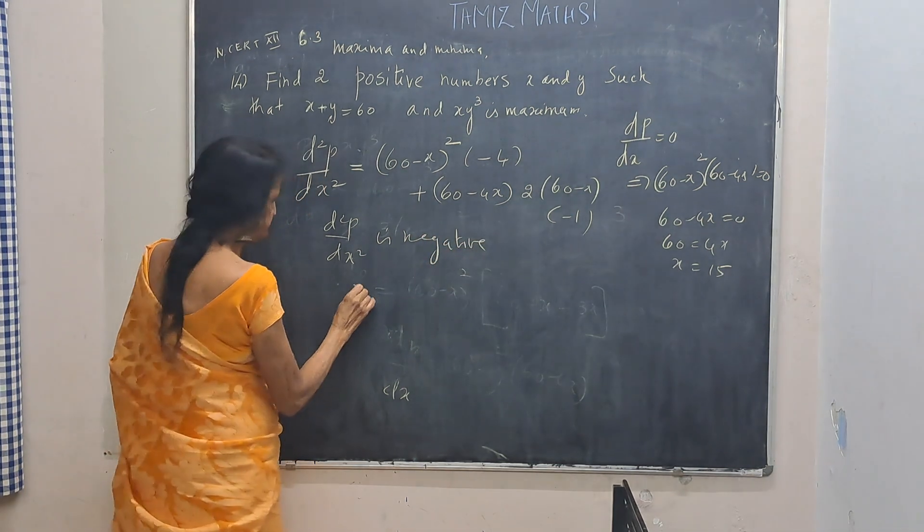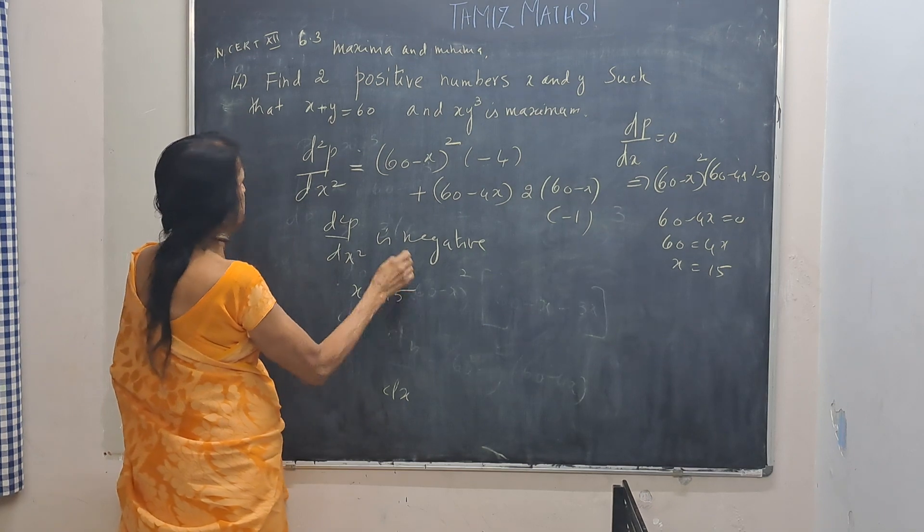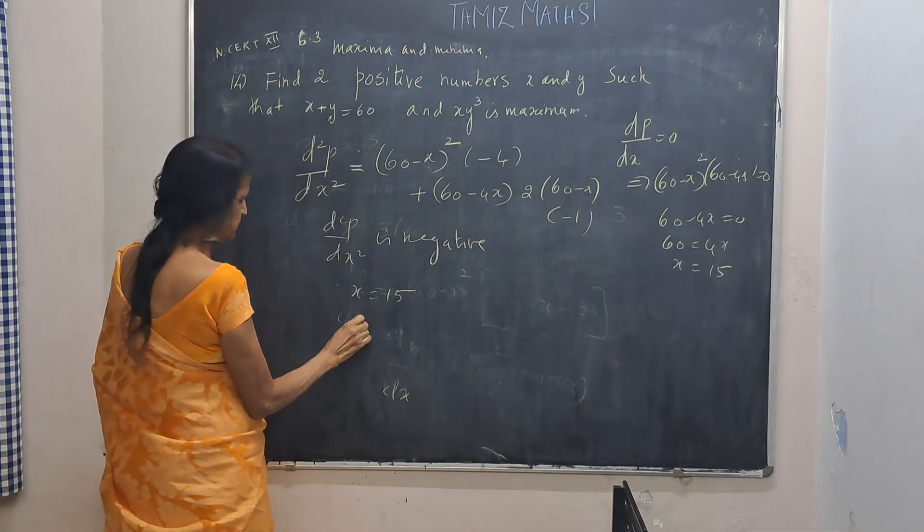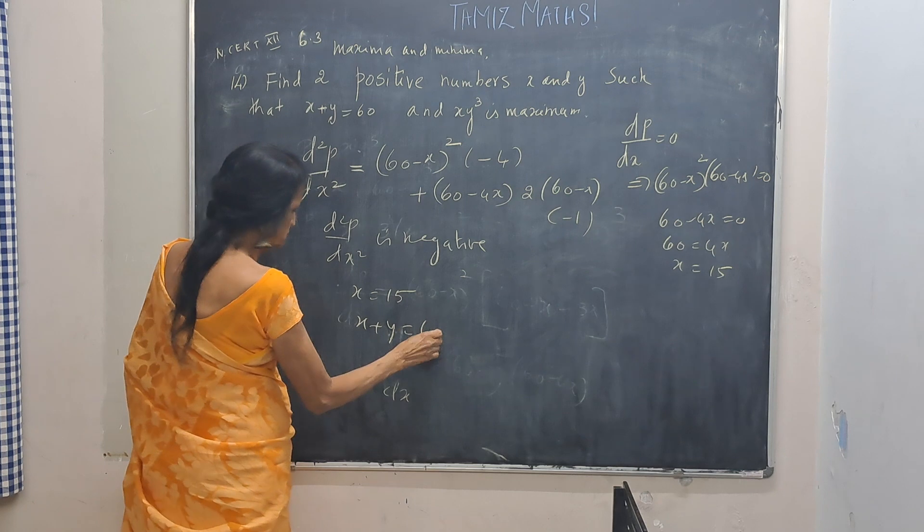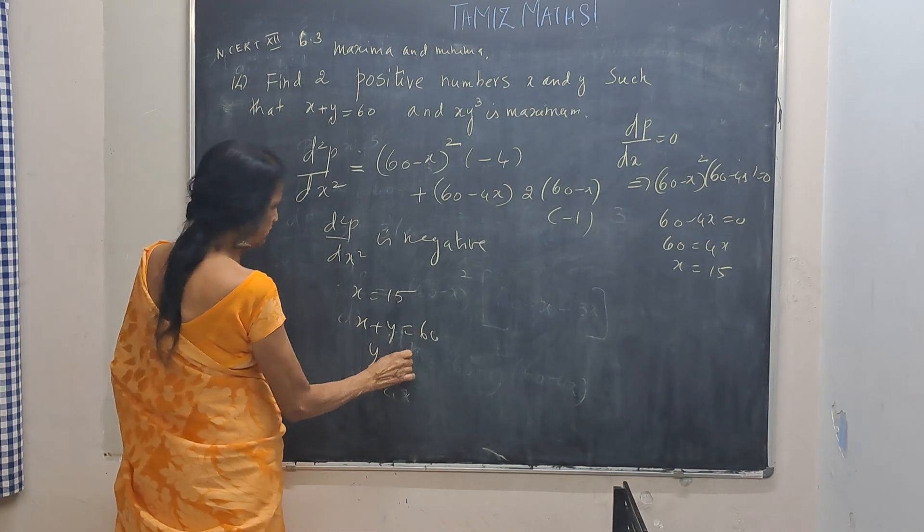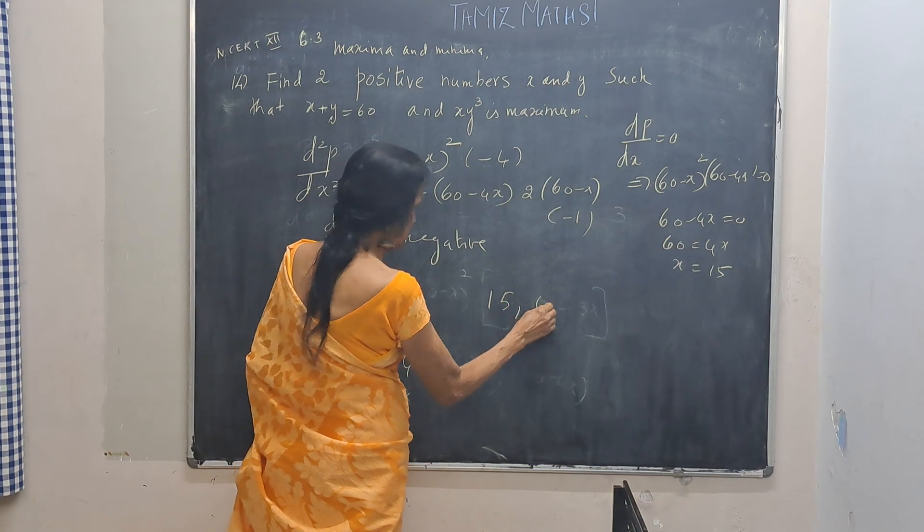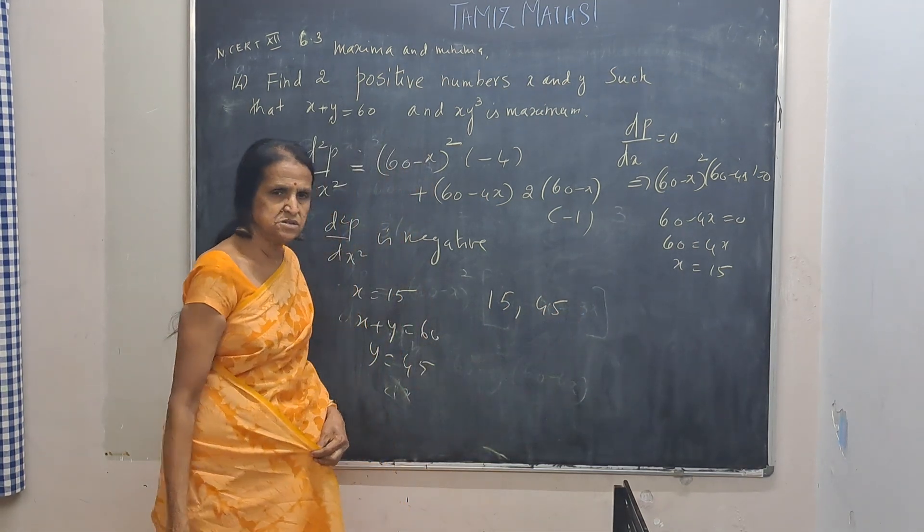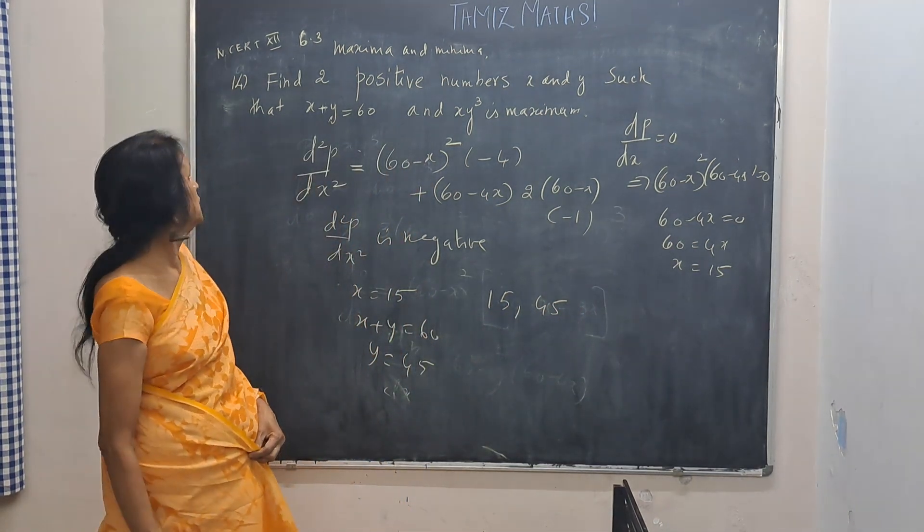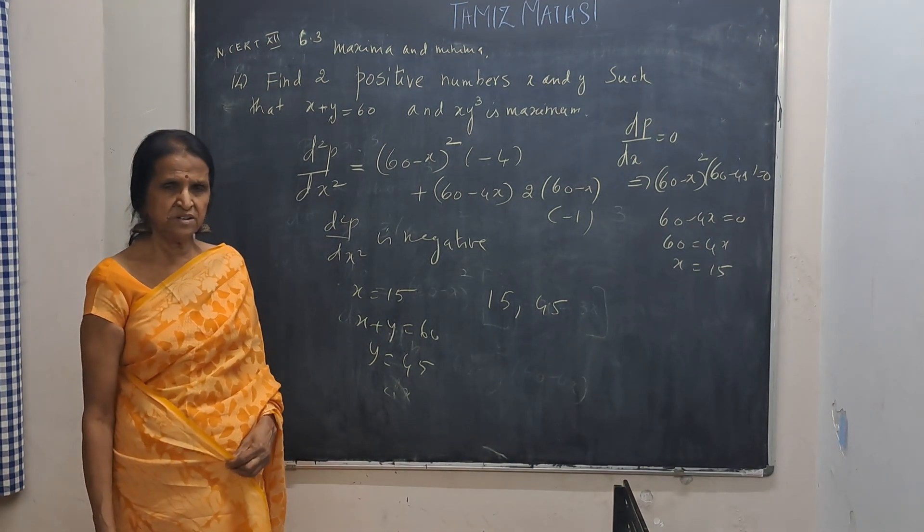Now x is 15. So what will be y? X plus y is 60. So what is y? 45. So what are the two numbers? 15 and 45. So this is problem number 14 in exercise 6.3.